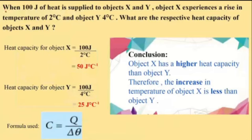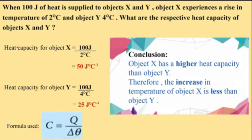Here is an example question. When 100 Joules of heat is supplied to objects S and Y, object S experiences a rise in temperature of 2 degrees Celsius and object Y 4 degrees Celsius. What are the respective heat capacities of objects S and Y? Heat capacity for object S: 100 Joules divided by 2 degrees Celsius gives 50 Joules per degree Celsius. For Y: 25 Joules per degree Celsius. As a conclusion, object S has a higher heat capacity than object Y, therefore the increase in temperature of object S is less than object Y.